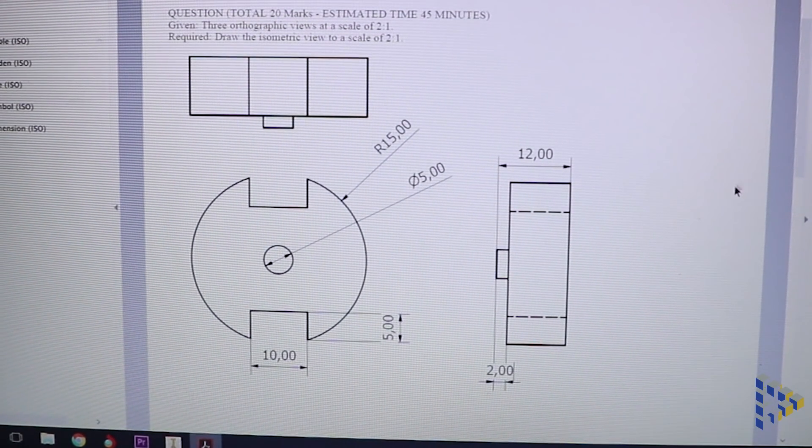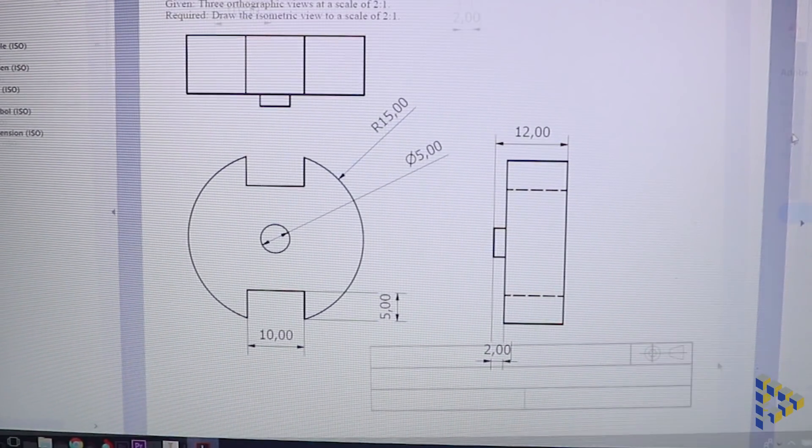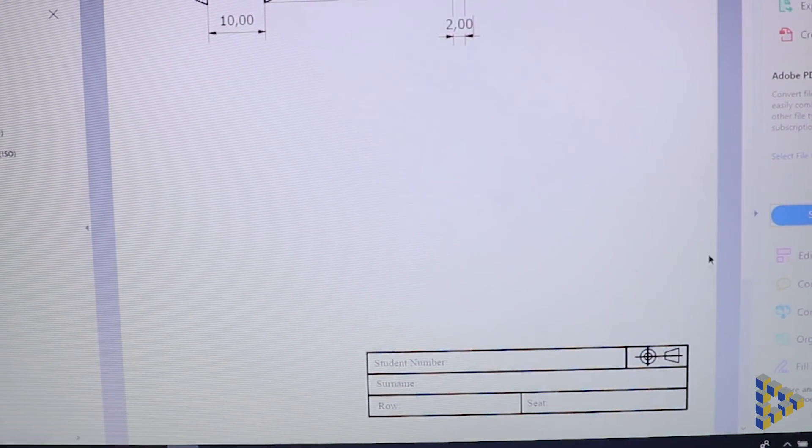Hey guys, you're given a problem where you have three views drawn at a scale of 2 to 1 in third angle orthographic projection, and you're asked to draw an isometric view to a scale of 2 to 1.